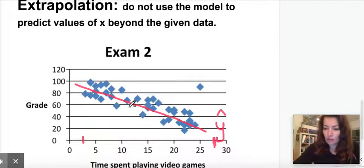If you were asked to use this prediction line to predict someone who spent 35 hours playing video games, what would their grade be on their exam? You're assuming that the relationship is going to continue the same way.